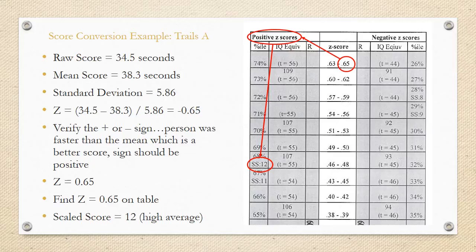If we look at our table, we want to find .65, and we want to go to the positive sign. Let's see what standard score area that falls in, and it looks like it's a standard score of 12, which we know to be a high average score. If the score was a negative .65, we would look to the right side of the graph here, and find that this falls into the scaled score of 9.